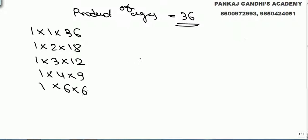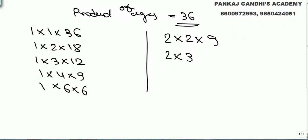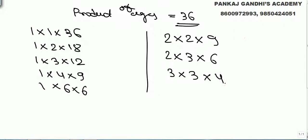We have seen all the possible combinations with one. Again we will get 1, 9, 4 — same thing. Two, one is already done so: 2, 2, 9. With two we have done everything. With three: 3, 3, 4. So now we have taken all the possible combinations.